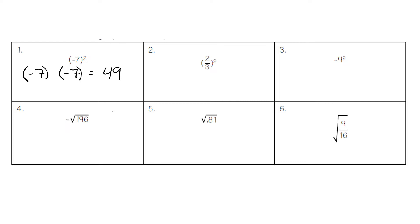For number two, because we have a fraction, we're going to do two-thirds twice because that's our exponent: two-thirds raised to the second power. Two times two is four, three times three is nine, giving us four-ninths. For number three, we have nine to the second power with a negative sign: nine times nine is 81, then we put the negative sign back in for negative 81.